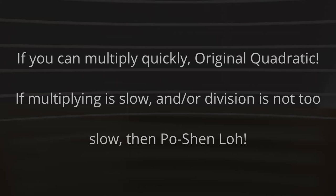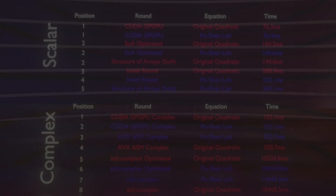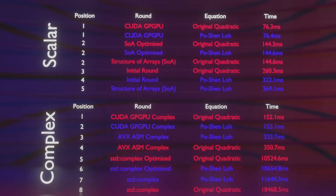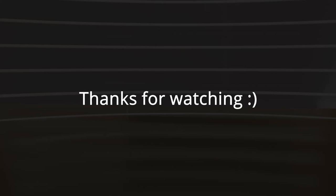Anyway, that was just a bit of fun. I don't think we can say which one is definitively faster — they are both absolutely excellent. Well done, Mr. Po Shen Lo — that is a really interesting formula that gives the original quadratic a run for its money in many different circumstances. Thanks very much for watching. There'll be an eBook put up for the Patreons. I hope that was interesting, and I want you to have a really good day. See ya, bye.